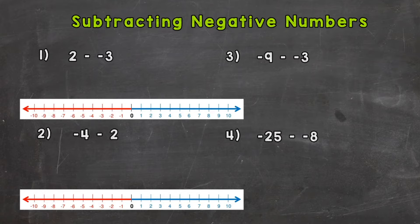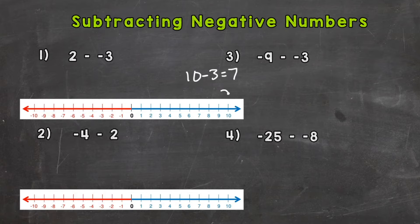For number one we have two minus negative three. Subtraction tells us to go backwards on a number line. So for example, if we had ten minus three, we know that equals seven — we start at ten and we take away one, two, three, and we end at seven.